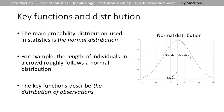We are going to cover key functions, distributions, and the main probability distribution used in statistics: the normal distribution. It's a perfectly symmetrical distribution. For example, height of individuals in a crowd roughly follows a normal distribution — most people fall around the mean, with some shorter and some taller people.